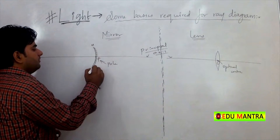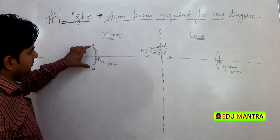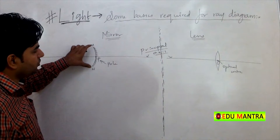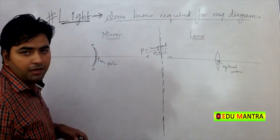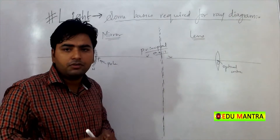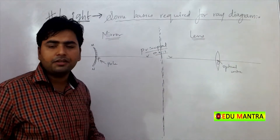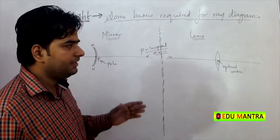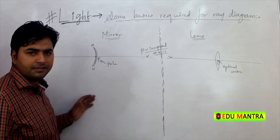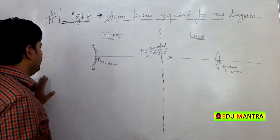This MN, jo length — height of the mirror ke hai — that is called the aperture of the mirror. At the tenth standard level, you do not need to calculate the aperture.